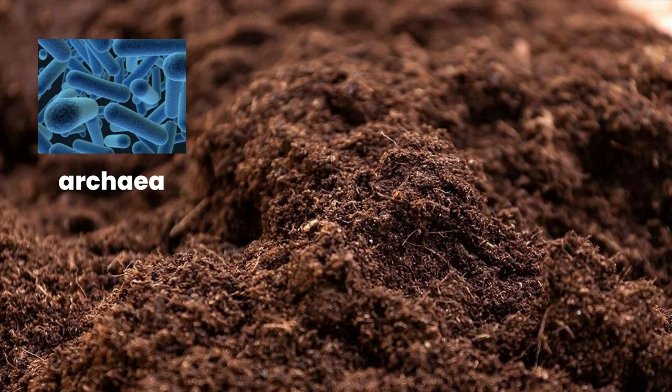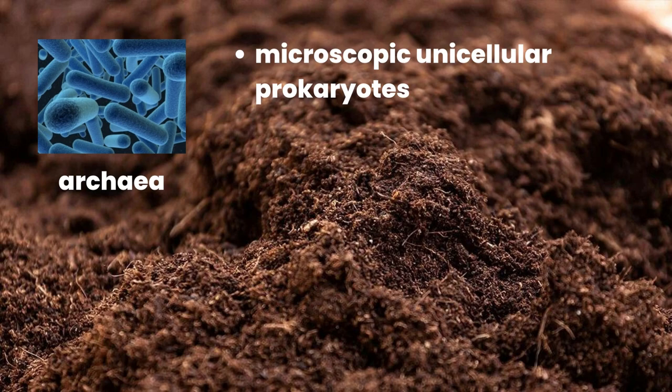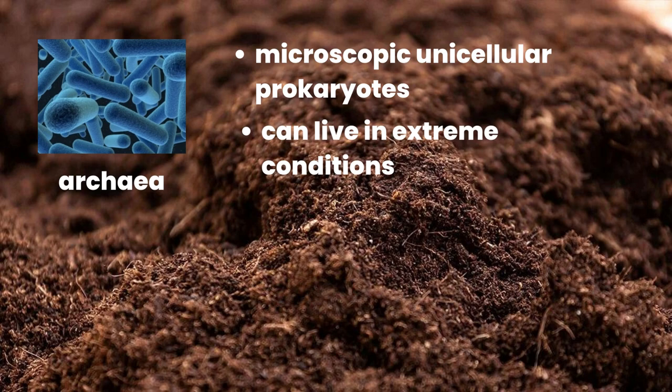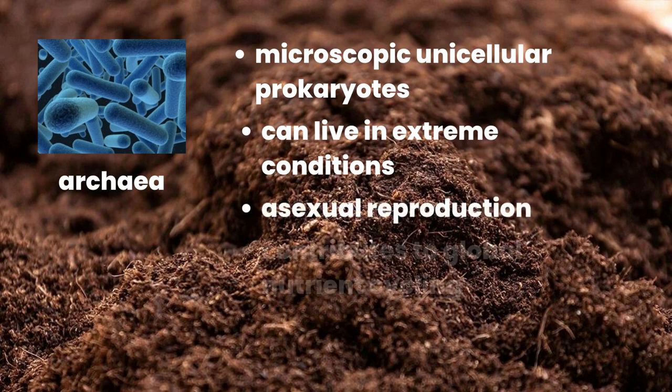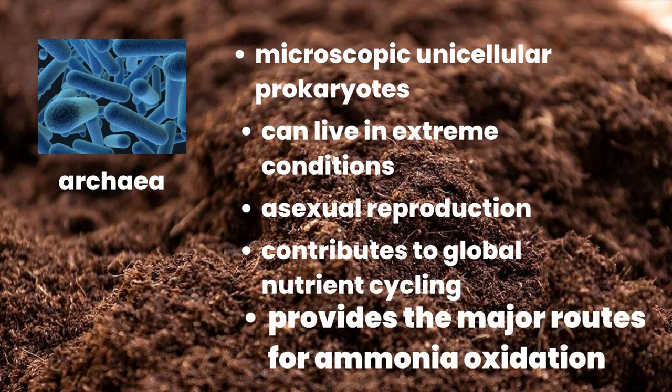A close look at achaea: they are microscopic unicellular prokaryotes that can live in extreme conditions. They undergo asexual reproduction and contribute to global nutrient cycling. Most importantly, they provide major routes for ammonia oxidation.